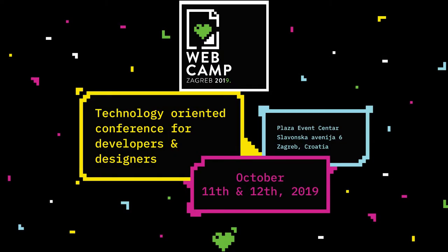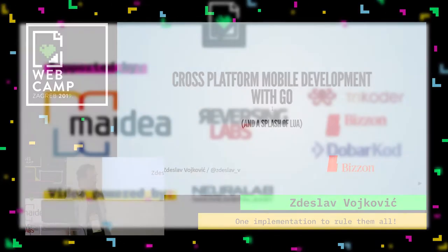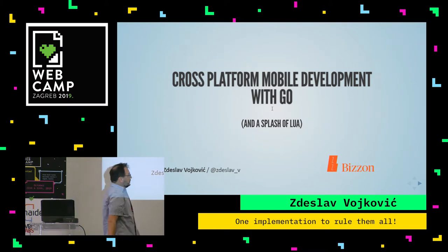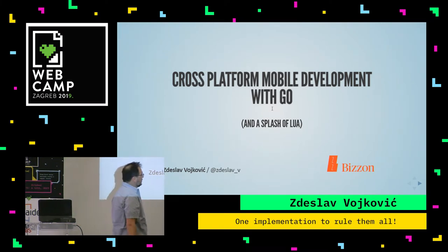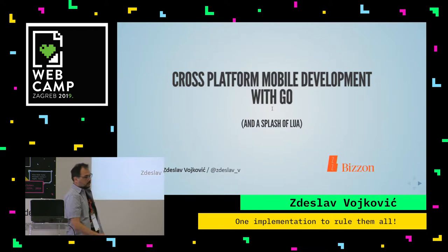Hi, my name is Eslav Ojkovic. I build payment systems at Bizon, which is a company that creates solutions for retail and hospitality industry. The talk is about using Go to simplify building mobile applications across multiple platforms.